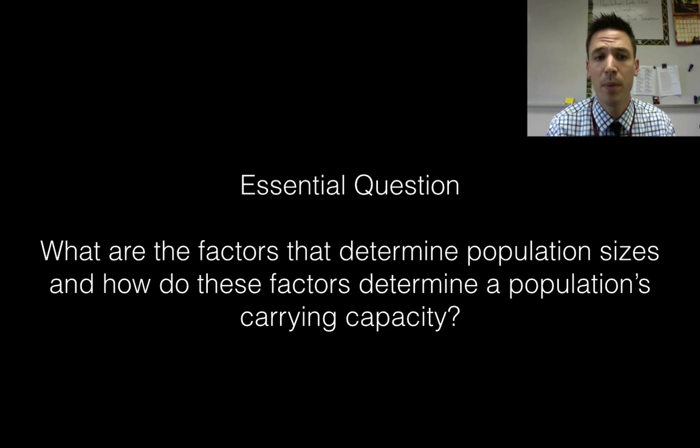So that's really all there is to populations. Going back to our essential question, what are the factors that determine population sizes? These are anything that cause higher or lower birth, death rates, immigration, emigration. We call those things limiting factors and they can be abiotic or biotic. And how do these factors determine a population's carrying capacity? Remember that carrying capacity just means the maximum number that can be supported, at the point when the population eventually levels off. If you can name some of these factors and understand carrying capacity, I think you're in good shape. You understand populations and I hope you guys learned something. Thanks.